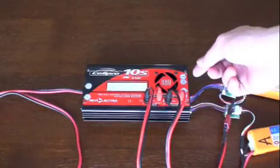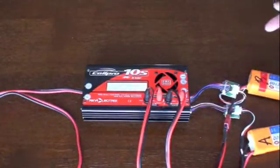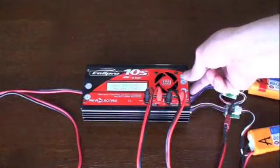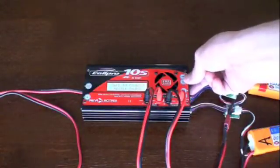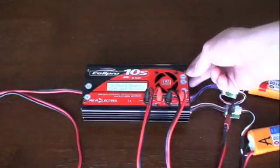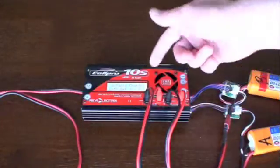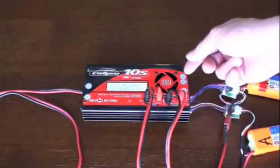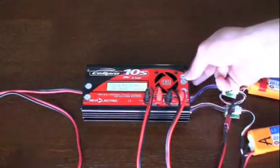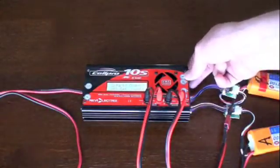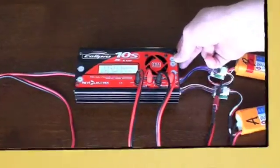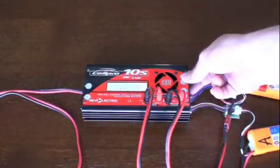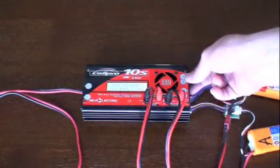So the first thing we'll want to do is cycle through the packs to see what kind of condition they are in. And to do that, we'll hit the mode and start and stop at the same time. And here we go. We're seeing that there are two packs connected. We're set at, I kind of missed it there, at 1C charge rate and we're at accurate charge mode and we're going to cycle through the packs here.